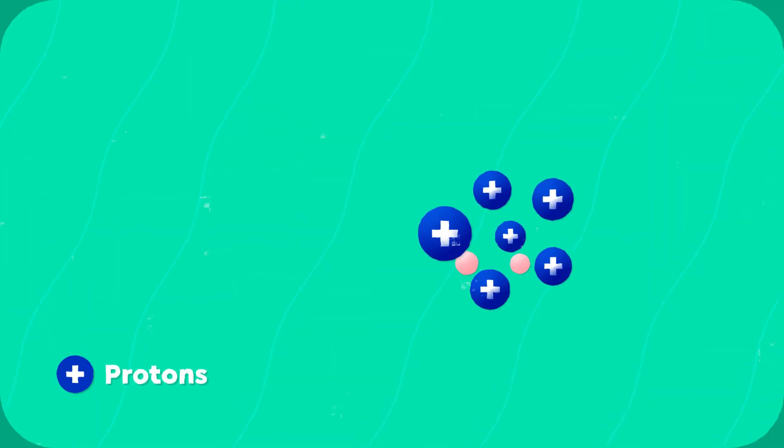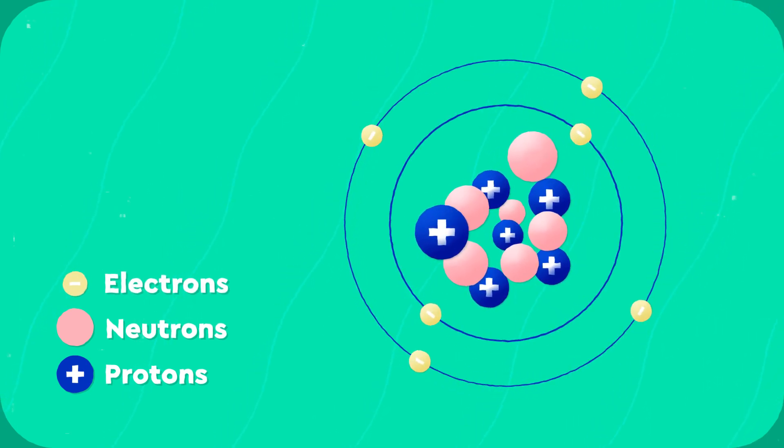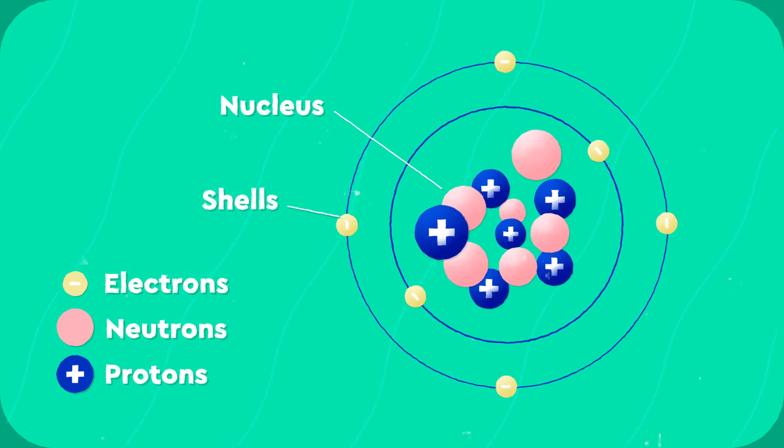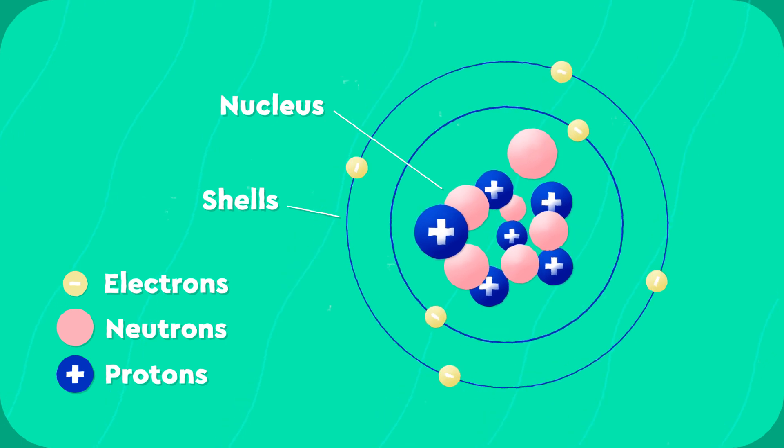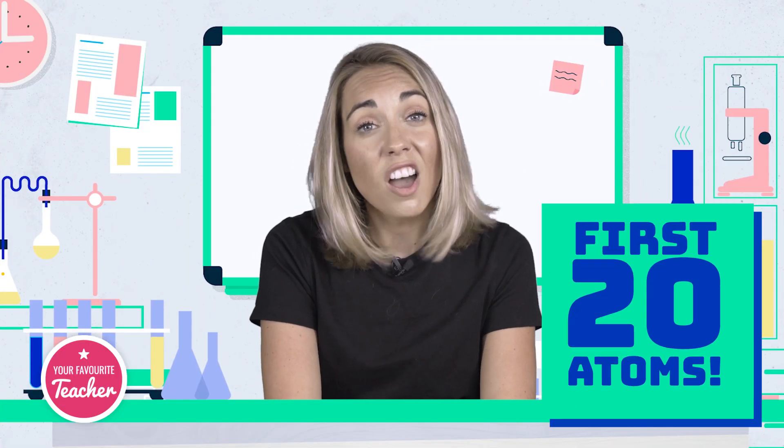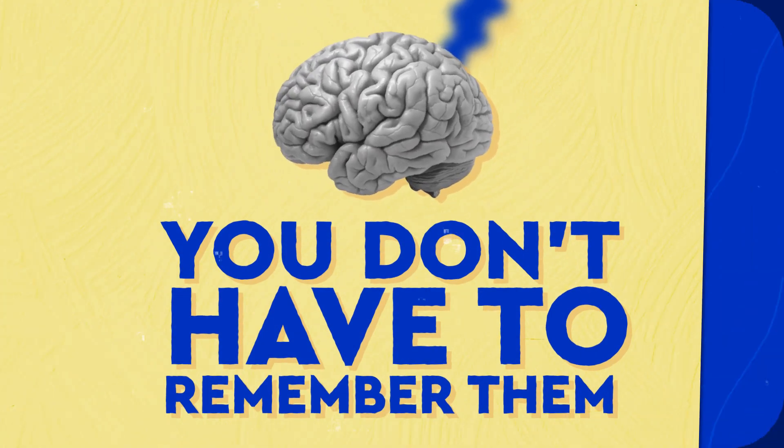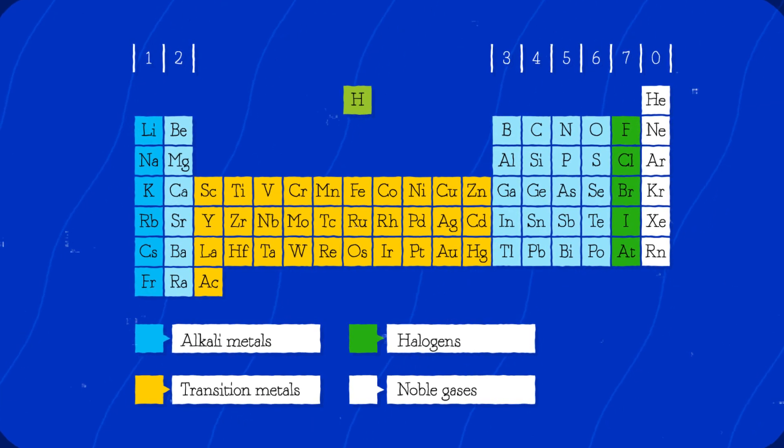As you know, an atom is made up of protons, neutrons and electrons. Protons and neutrons are found in the nucleus and electrons orbit the nucleus in shells. The electrons are arranged in predictable ways around the nucleus and you're expected to know the first 20 atoms. Don't worry, you don't have to remember them, you just need to be able to use the periodic table and remember a couple of rules.